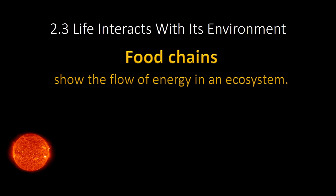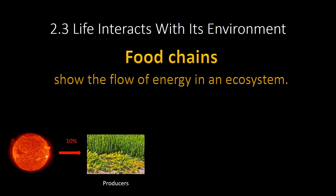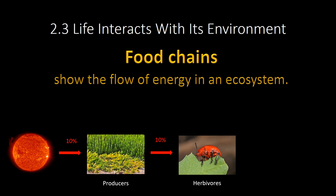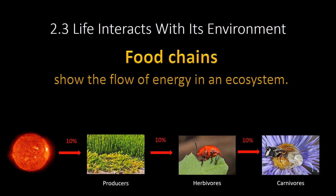Food chains are simplified diagrams that show the flow of energy and nutrients in an ecosystem. In terrestrial ecosystems, all energy starts with the sun. Plants, which are producers, make that energy available through photosynthesis — but not all of it. Only about 10% of the energy from the sun is actually stored by plants. When an herbivore eats a plant, only 10% of that stored energy goes to the herbivore. And when a carnivore eats a herbivore, only 10% of that energy flows to the carnivore. There's an incredible amount of energy loss as you go up in trophic level. Trophic level is simply your feeding level.